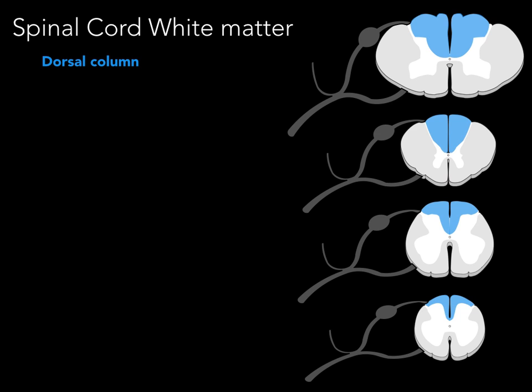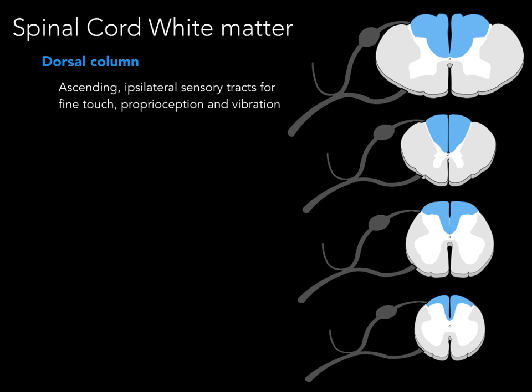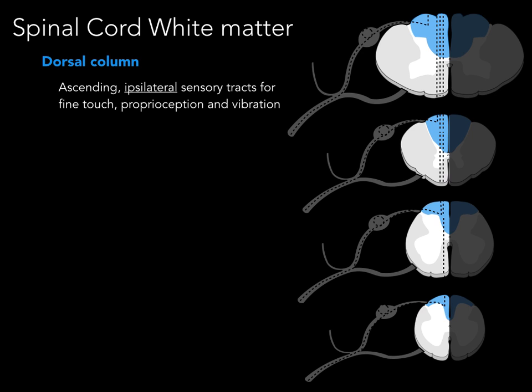In blue, we have the dorsal column or posterior column, named because it is a group of white matter between the posterior horns of the gray matter. It carries ascending, ipsilateral sensory tracts for fine touch, proprioception, and vibration. It is ipsilateral because that information travels up the same side — proprioception, vibration, and fine touch ascend on the same side that they entered the spinal cord.